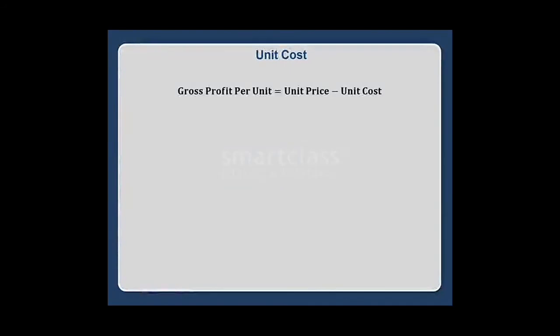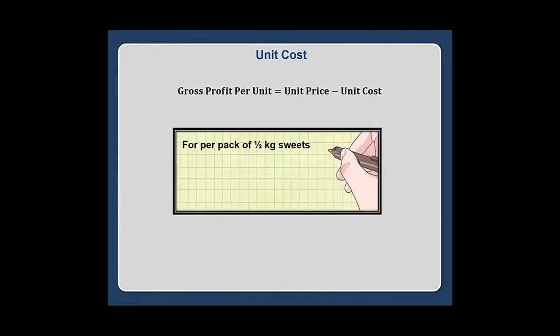The formula for gross profit per unit is shown on the screen. Using the sweets vendor example: the unit price per pack of half kg sweets is rupees 60, the unit cost per pack of half kg sweets is rupees 50, and hence the gross profit per pack of half kg sweets is rupees 10.